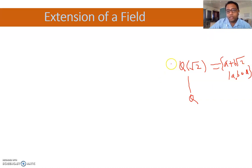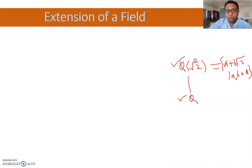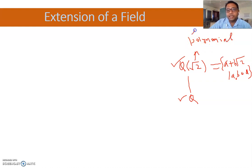Q(√2) भी एक field है और Q भी एक field है। इसका मतलब Q(√2) जो है वो Q का एक extension है। यह extension हमने √2 की help से create की है — √2 को हमने Q के साथ adjunct किया। यह जो adjunct किया है वो किसी polynomial का root होगा। Final हमारा topic होगा: how to adjunct a root in a given field.